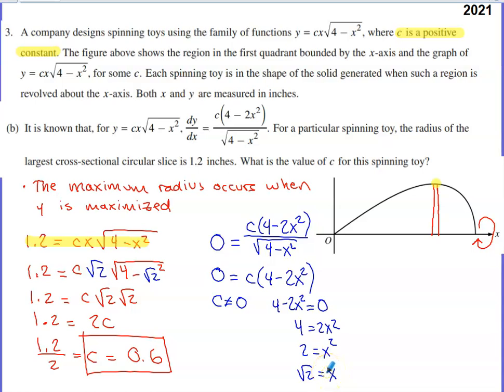So how does that help me find the value of c? Well, I know not only do I have to have a critical number at this x value that we just identified, but at that critical number, our radius has to be 1.2. So when I plug square root of 2, the x value that gave the derivative a value of zero for the numerator...